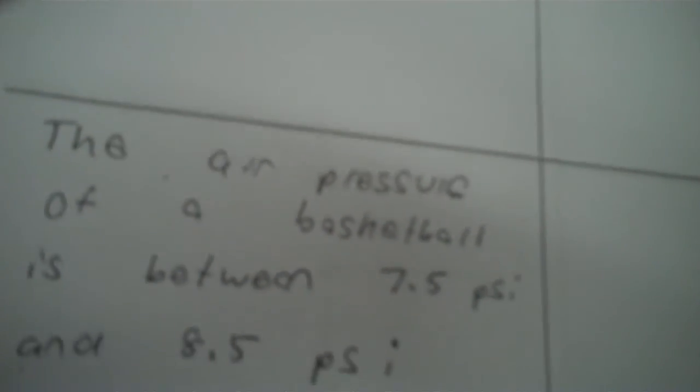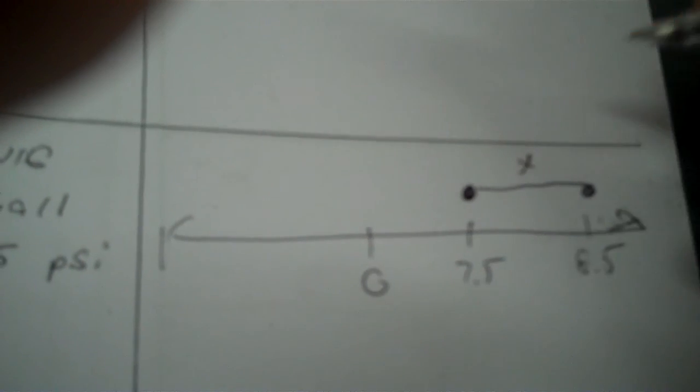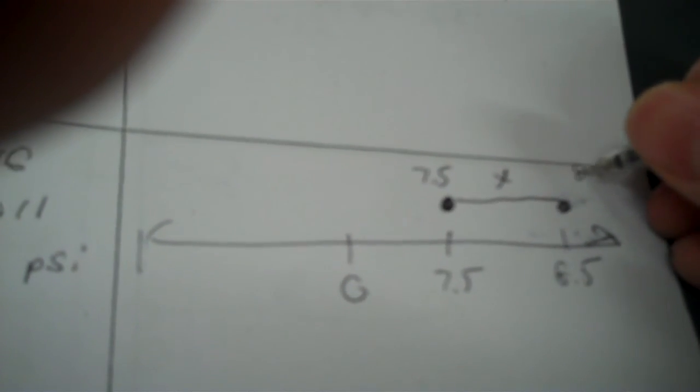The air pressure of a basketball is between 7.5 and 8.5. So we've got 7.5 and 8.5, between them. Write the sentence — so going this way, open up towards the X. But going back this way, open up towards the number. As you can see on all these, the signs are going the same way. Alright, that's it.